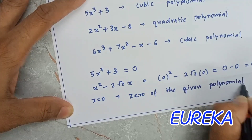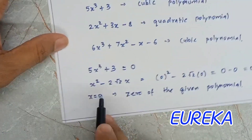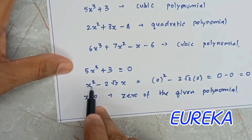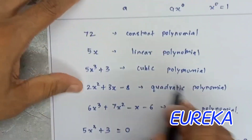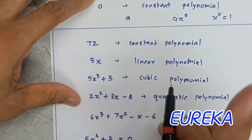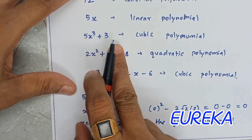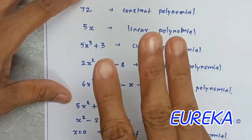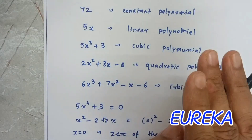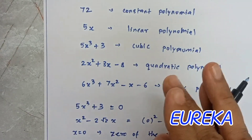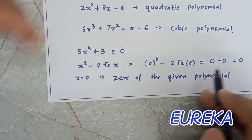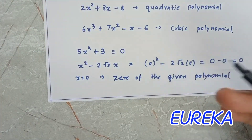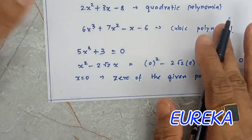There is one important point here. If the degree of a polynomial is 2, then we should have 2 zeros. If the degree is 1, it will have at least 1 zero. And if the degree is 3, we should get at least 3 zeros. We will take some more examples in the next part.